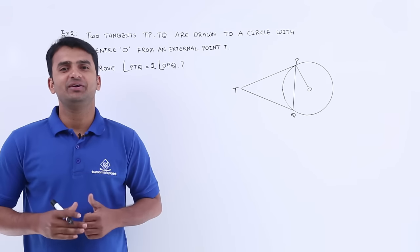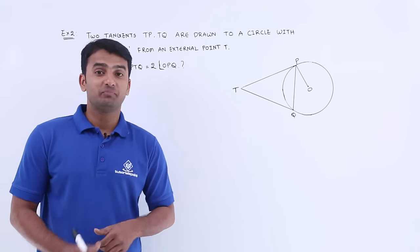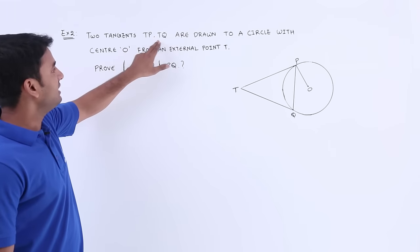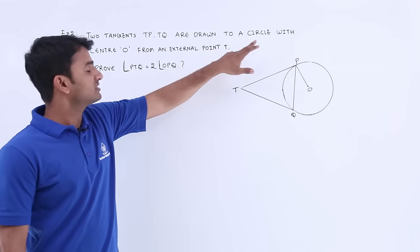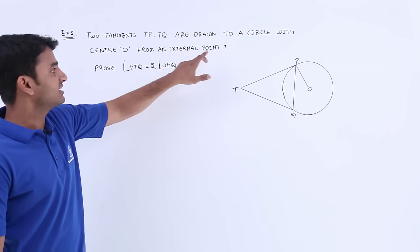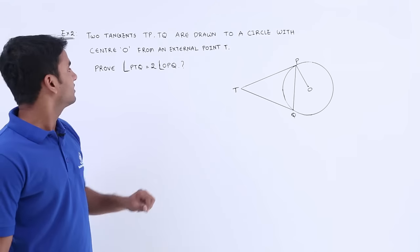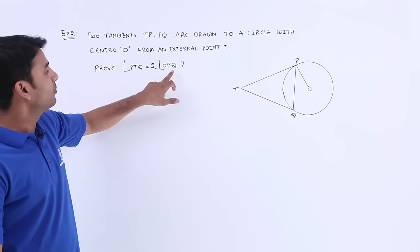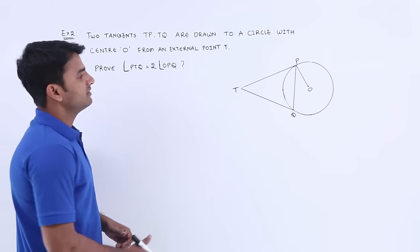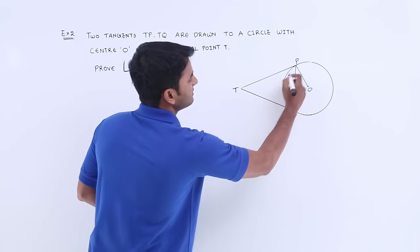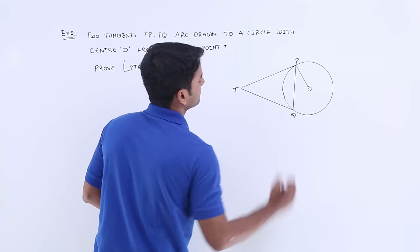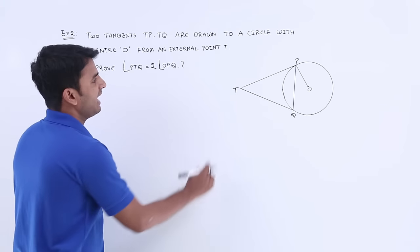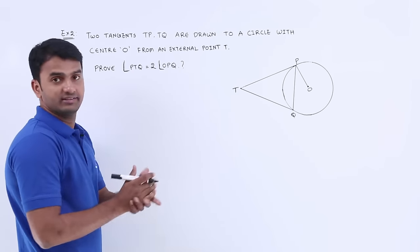Hello guys. In this video we are going to deal with problem number two. Two tangents TP and TQ are drawn to a circle with center O from an external point T. Here we have to prove angle PTQ is equal to two times angle OPQ. A diagram is given — this is a circle with center O, and T is the external point, with TP and TQ as two tangents.